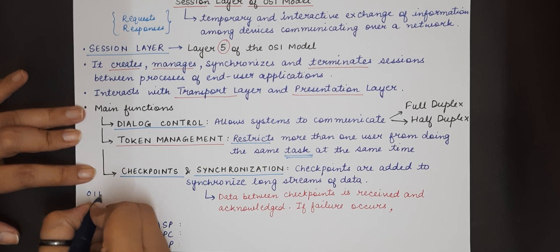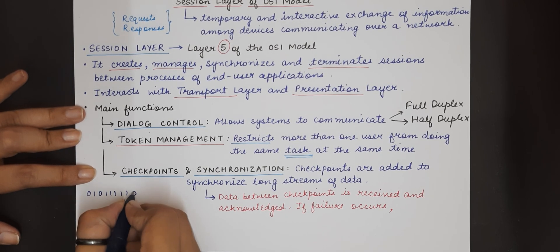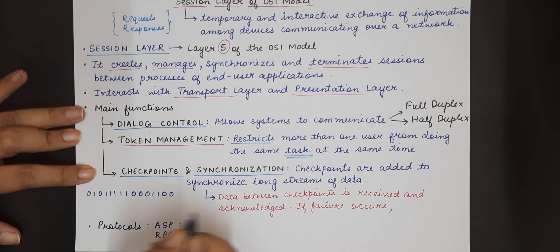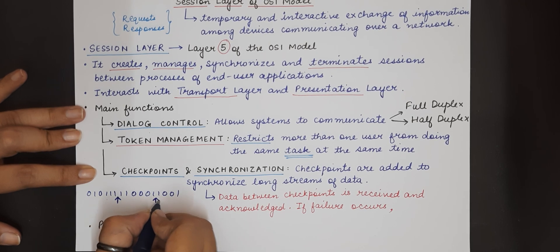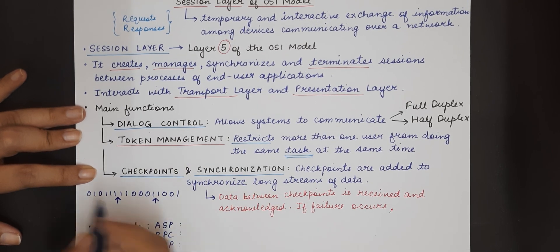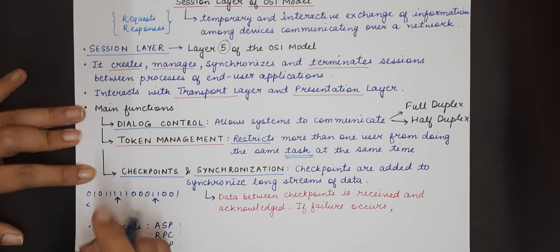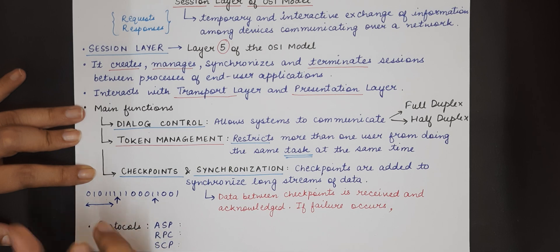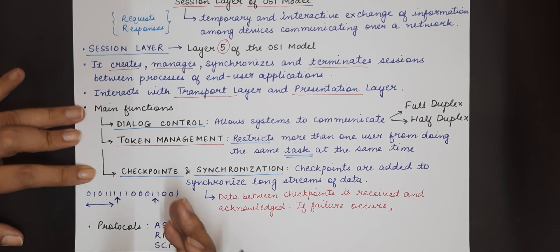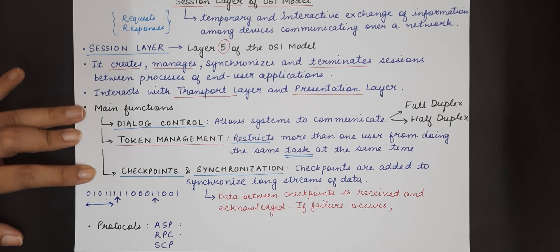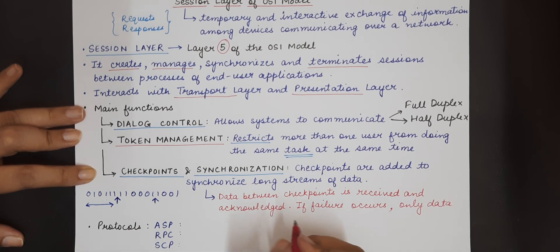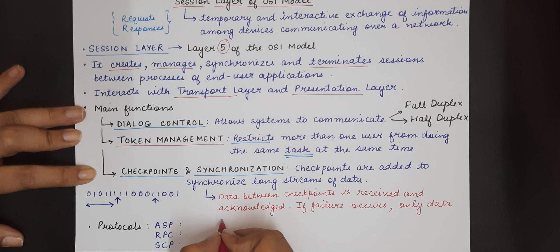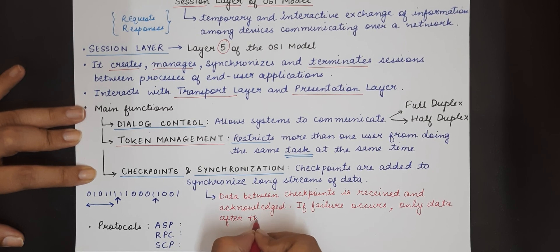So if there is a long stream of data which is being exchanged by a sender and a receiver, then the session layer adds points at different locations or at regular intervals. So all the data that is being exchanged between any two checkpoints is acknowledged by the receiver and even if a failure occurs only the data after the checkpoint will be resent. So only data after the last checkpoint is resent.